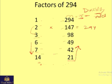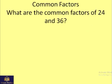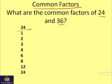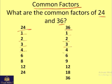Next is the concept of common factors. For example, given 24 and 36, one way to find common factors is to list all factors of both numbers. The factors common to both 24 and 36 are: 1, 2, 3, 4, 6, and 12.